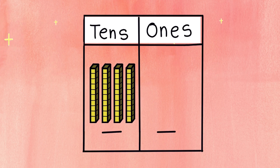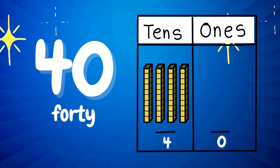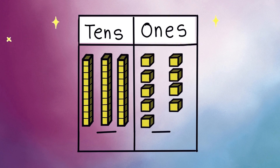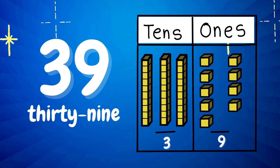Next number. It has two digits: four tenths and zero ones. It is number forty! Next number. It has two digits: three tenths and nine ones. It is number thirty-nine!